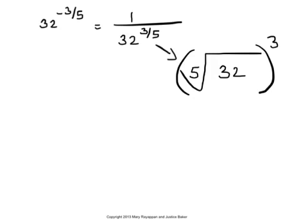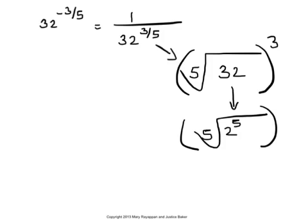Since 32 is 2 to the power of 5, and we are taking the fifth root of that, and then cubing it, we get the fifth root of 2 to the power of 5 as 2 itself. And that's cubed, and so we have 8.